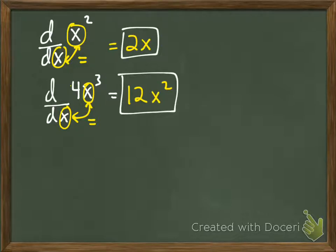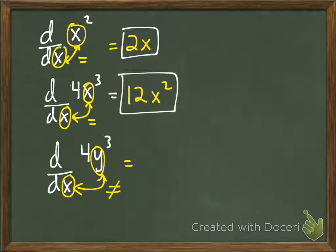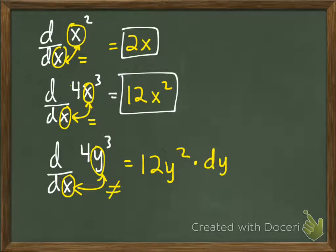I'm setting you up for success here. The derivative of 4y³ with respect to x — notice these letters are not equal. Since they're not equal, you have to use the chain rule. 3 times 4 is 12, y to the 3 minus 1 is y squared. But since they're not equal, we don't know what y is — we just know it's not x. As long as it's not x, we have to multiply by the derivative of it, dy/dx.